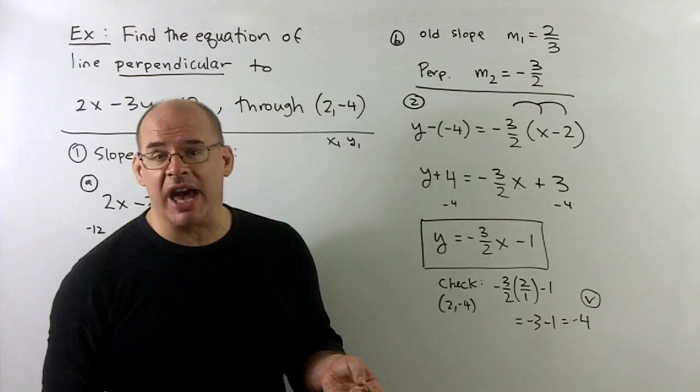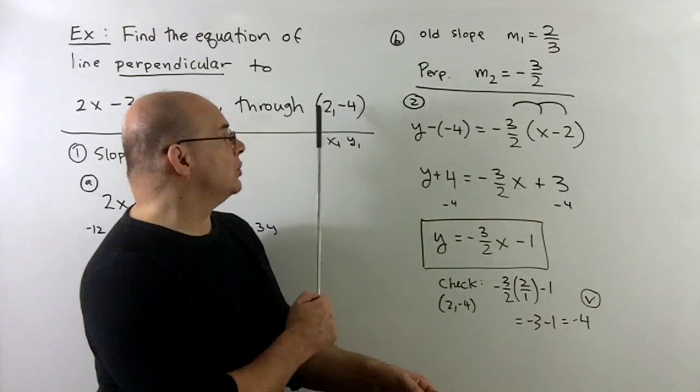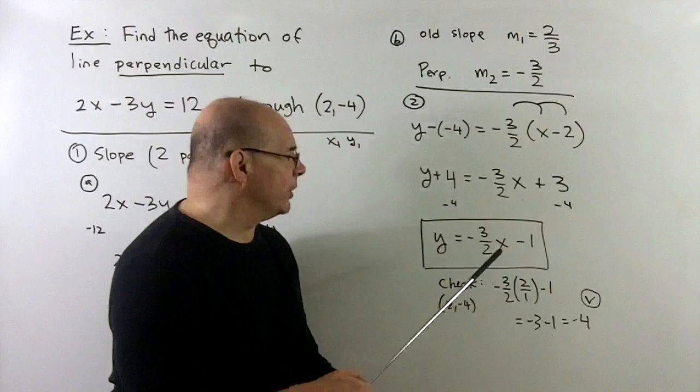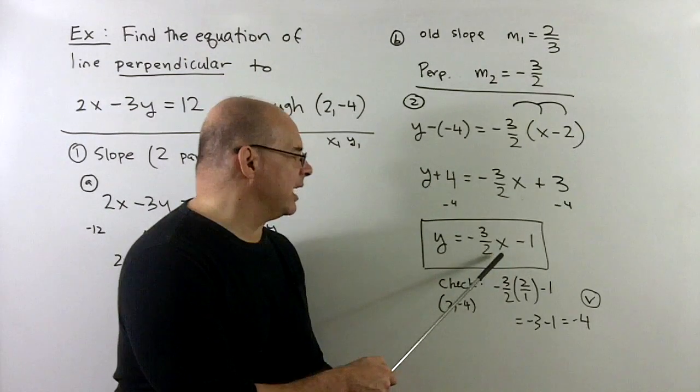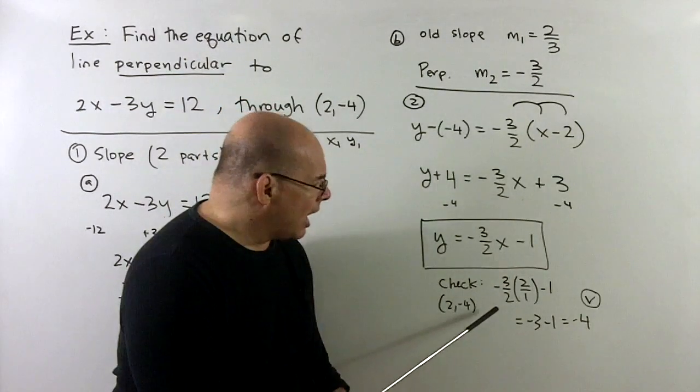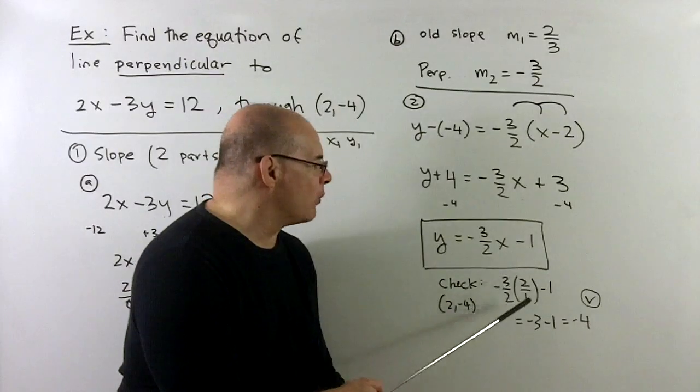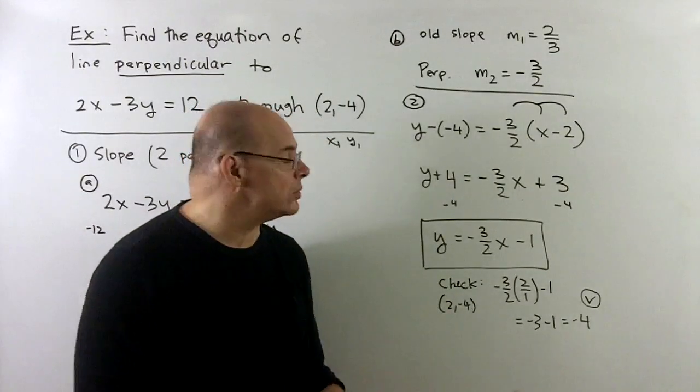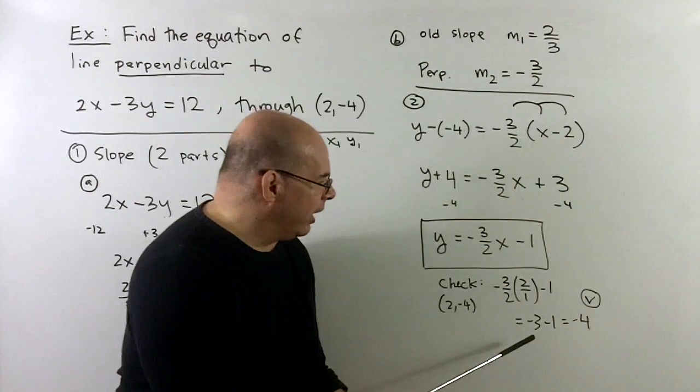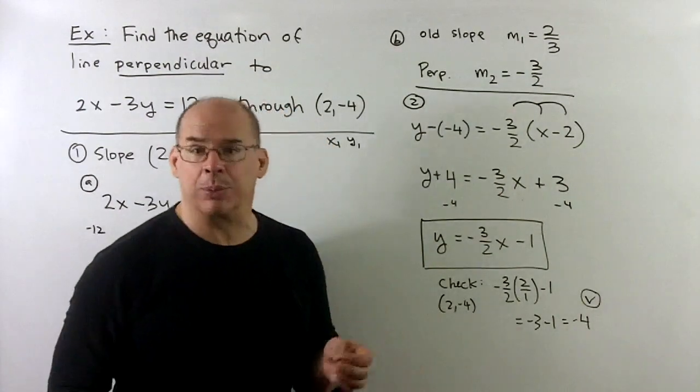As usual, we have a light check. I could take our point, the (2, -4). If we put 2 into this equation, we're expecting to get a minus 4 out. I'll put the 2 in as a 2 over 1, so there's no confusion of where the 2 goes. And then, we're going to wind up with a minus 4, as promised.